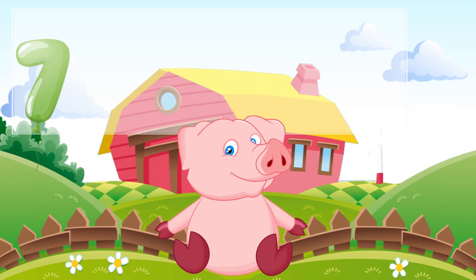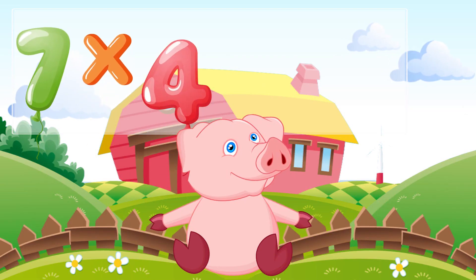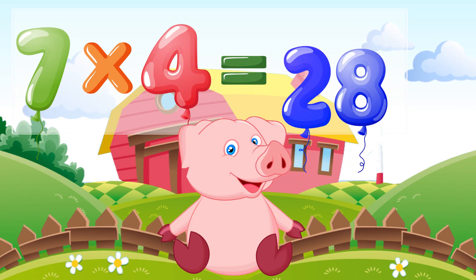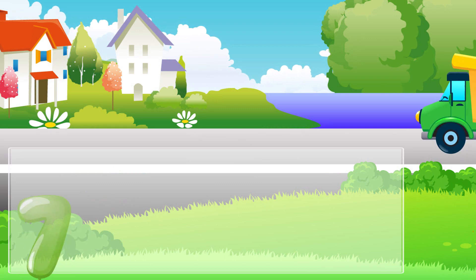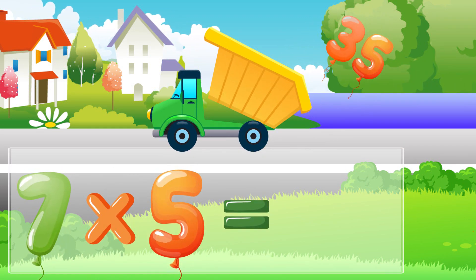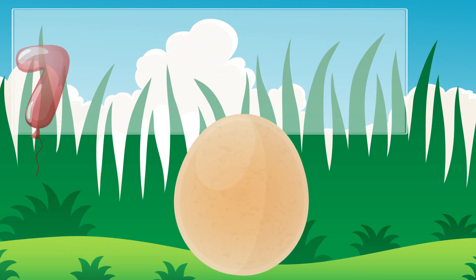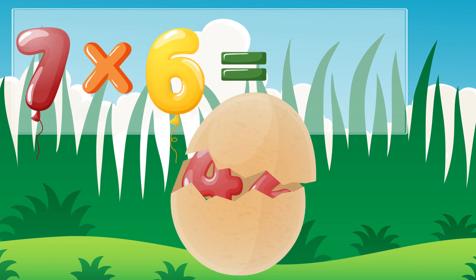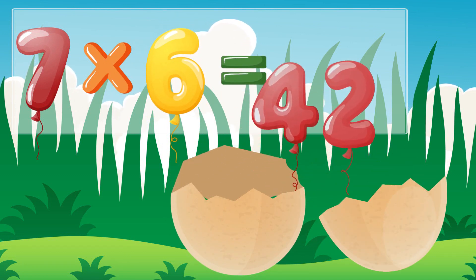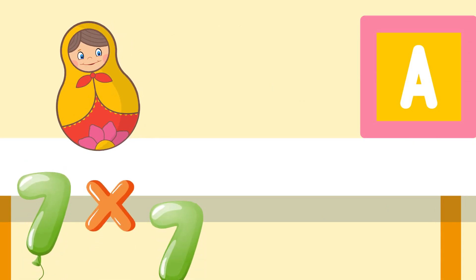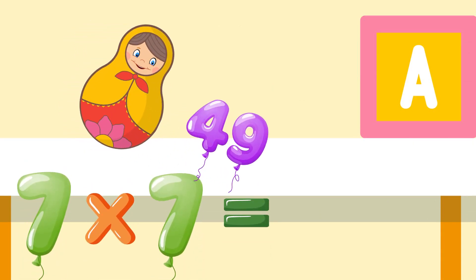Seven times four is twenty-eight, seven times five is thirty-five, seven times six is forty-two, seven times seven is forty-nine.